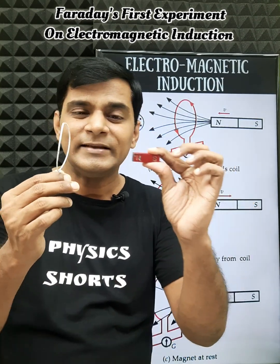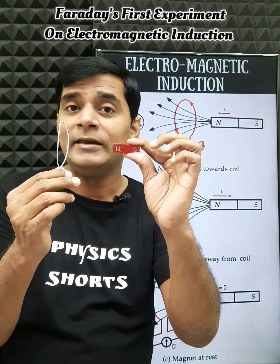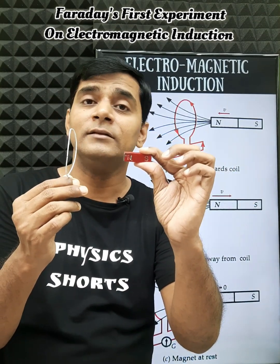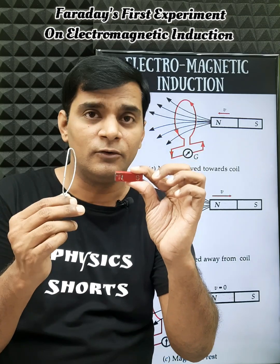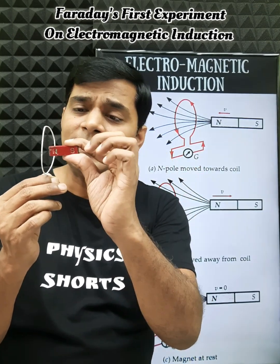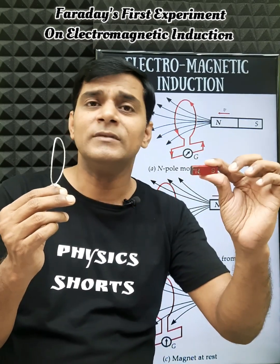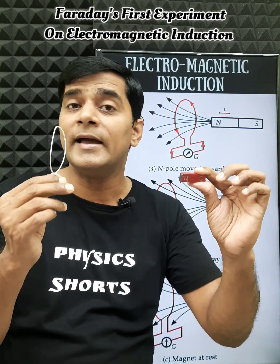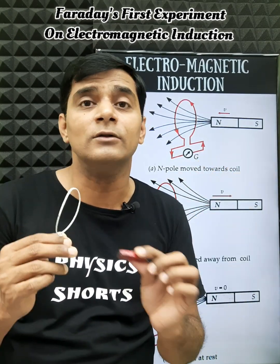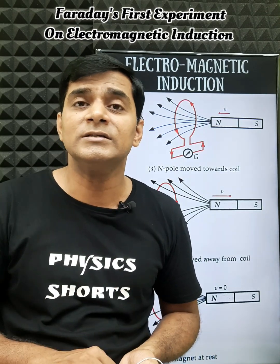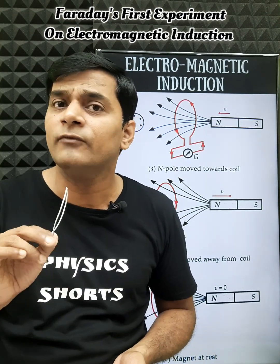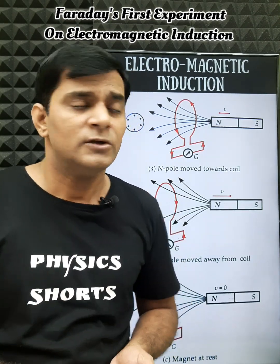If the magnet is at rest at any position, then the current will be zero. When the magnet moves away from the loop, the direction of the current is also reversed. This was observed by Faraday in his first experiment.